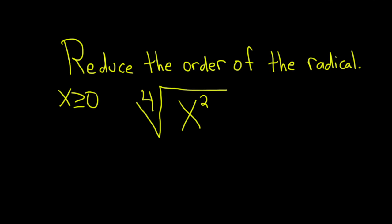Hi, in this problem we're going to reduce the order of the radical, where x is greater than or equal to zero. Generally speaking, when dealing with radicals, you want to assume that everything is positive so you can use these properties and rules.